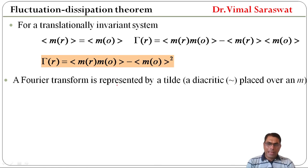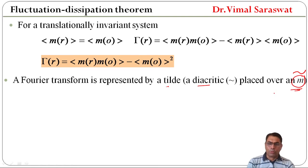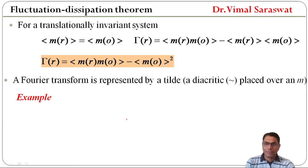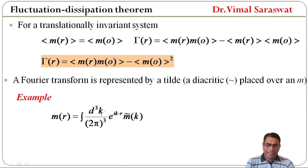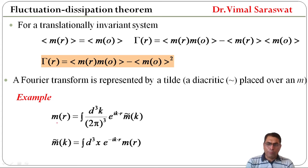A Fourier transform is represented by a tilde diacritic placed over the symbol. For example, M(r) = ∫ d³k/(2π)³ · exp(ik·r) · M̃(k). The Fourier transform of M(r), that is M̃(k), equals ∫ d³x · exp(−ik·r) · M(r). Since M(r) is real, M̃*(k) = M̃(−k).